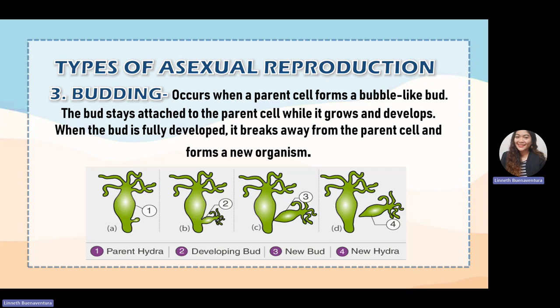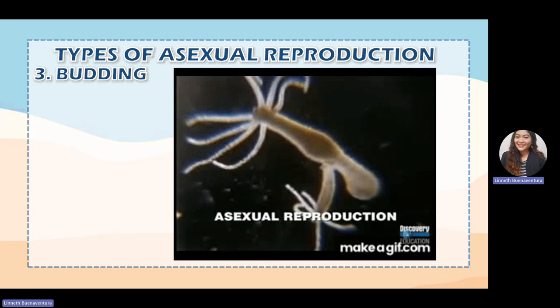The third type is budding. Budding is an asexual reproduction that occurs when a parent cell forms a bubble-like bud. The bud stays attached to the parent cell while it grows and develops, and once fully developed, it detaches from the parent to create a new organism. The video clip shows how a hydra reproduces through budding — the new hydra forms and once fully developed, it detaches from the parent hydra.